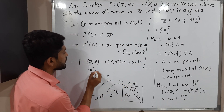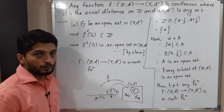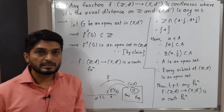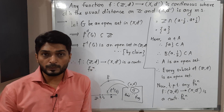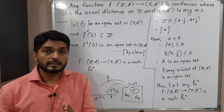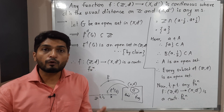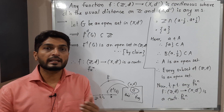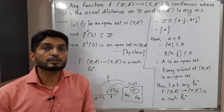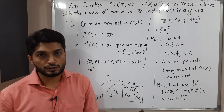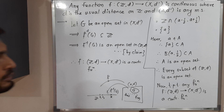Such an important result we have proved. That means if the domain is Z_d where d is the usual distance, then irrespective of the co-domain and the definition of the function, we can definitely say that function is a continuous function. The proof is over here. Thank you. See you.